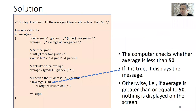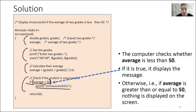Here is the code from last week. We have the variable declarations, the input, the calculation, and then the selection statement. This is the condition — if the condition is correct, the first statement after the condition will be executed. If it is true, that statement runs; if it is false, we just continue with the next statement.